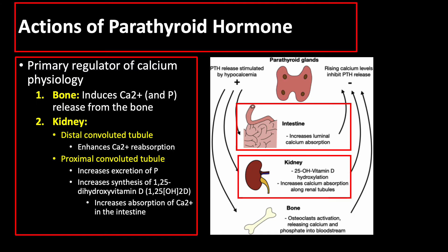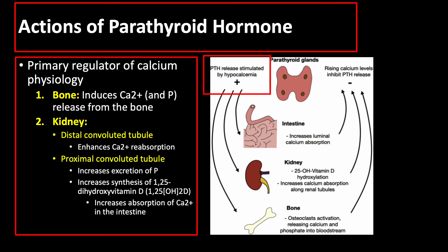All three mechanisms ultimately lead to an increase in blood calcium level. Moreover, ionized calcium level plays a key role in the control of parathyroid hormone secretion. If there is hypocalcemia, parathyroid hormone release is increased, while in hypercalcemia, there is inhibition of parathyroid hormone release.